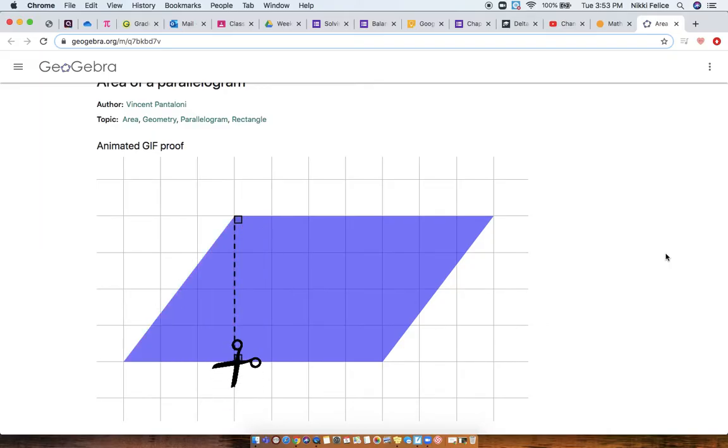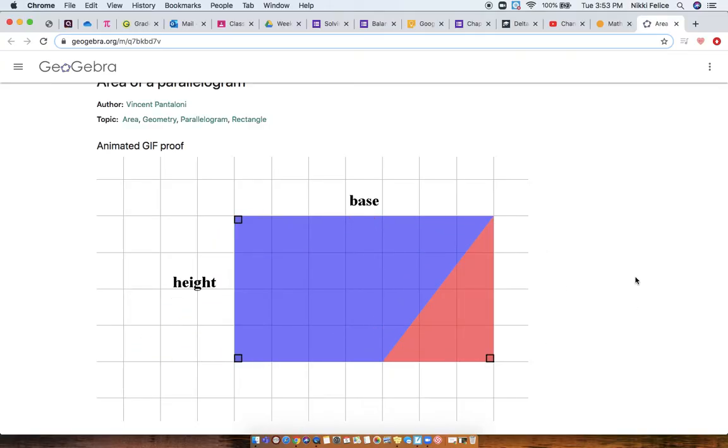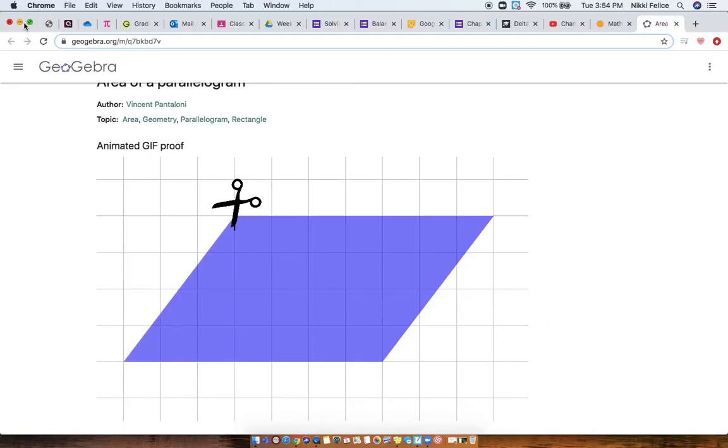So a parallelogram and a rectangle are really similar. Basically a parallelogram is a slanted rectangle, which means to find the area of a parallelogram, it's almost the same thing as finding the area of a rectangle. We're going to multiply basically the length times the width, but because it's slanted we call it base and height.